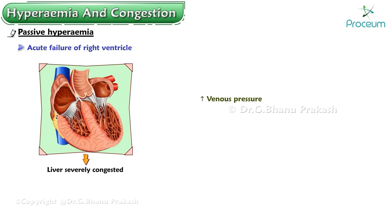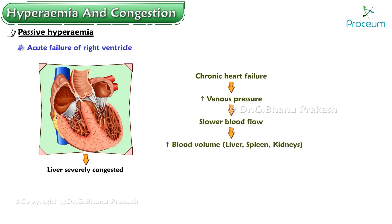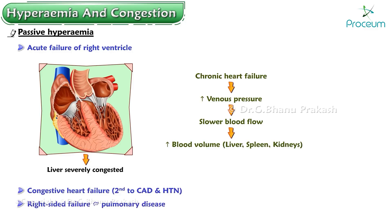Generalized increases in venous pressure, typically from chronic heart failure, lead to slower blood flow and a consequent increase in blood volume in many organs, including the liver, spleen, and kidneys. Congestive heart failure secondary to coronary artery disease and hypertension, and right-sided failure due to pulmonary disease, are the most common causes of generalized venous congestion.